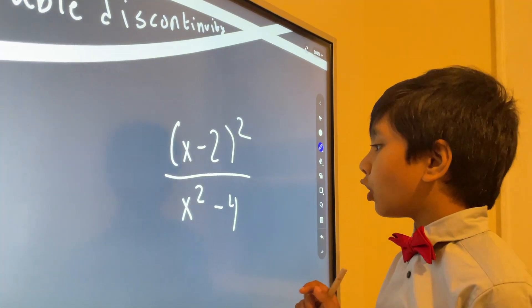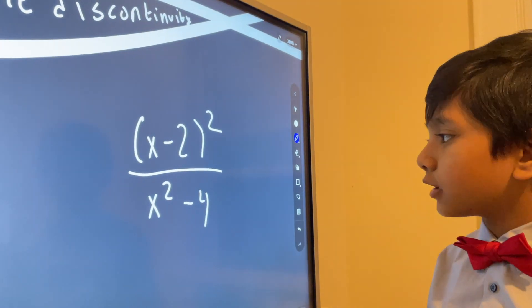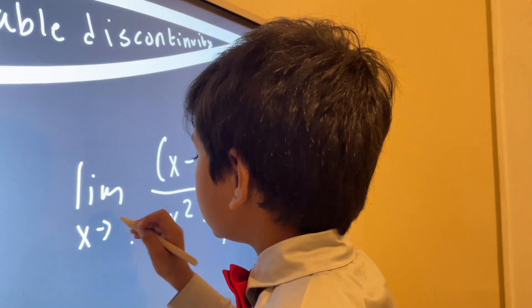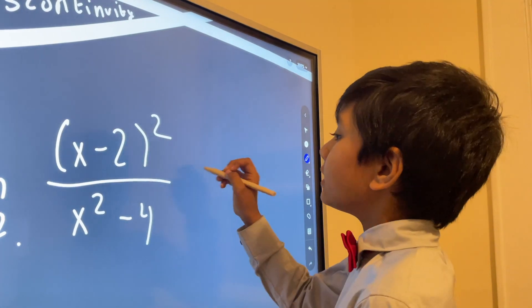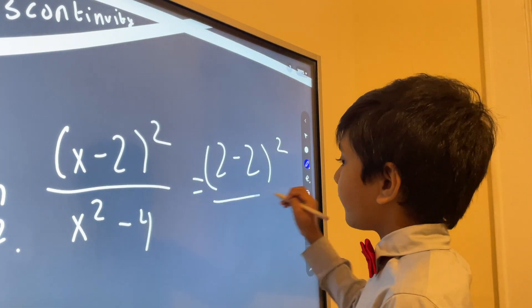This is what's called a removable discontinuity. The limit as x approaches 2 would be a discontinuity when you figure everything out.